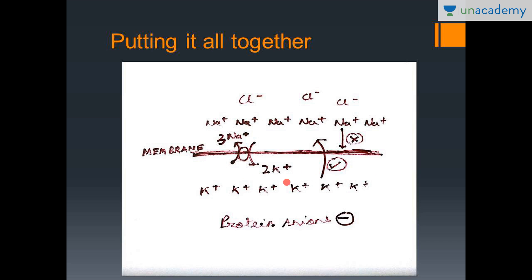The Na+K+ATPase also augments this polarization — it pushes out three sodium and takes in two potassium, sending out more positive charge and getting less positive inside, thus developing a negative charge on the inside. Overall, there is a fine balance between the concentration gradient of potassium driving it out and the electrical gradient driving it in, with the membrane being negative on the inside and slightly positive on the outside. The Na+K+ATPase just augments this resting membrane potential.